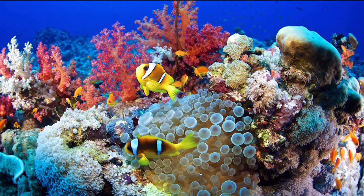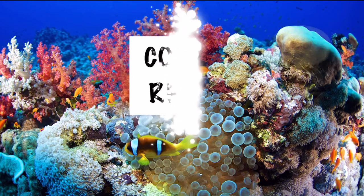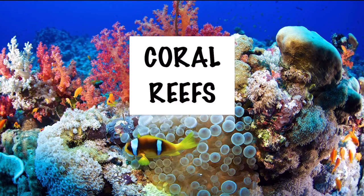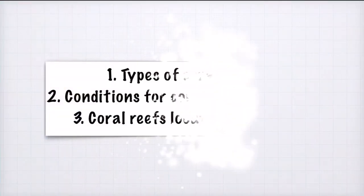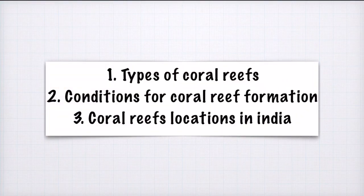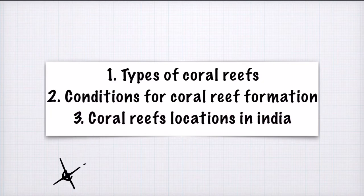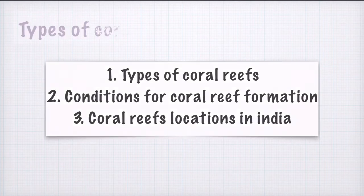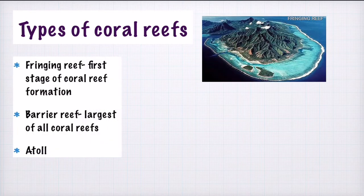Welcome back to Abstract Learning. Today we will complete the basic concepts and cover three headings: types of coral reef, conditions for coral reef formation, and coral reef locations in India. We have already studied that there are three types: fringing reef, barrier reef, and atoll.